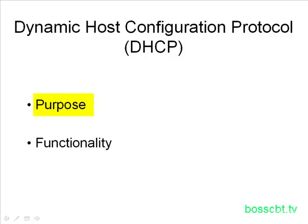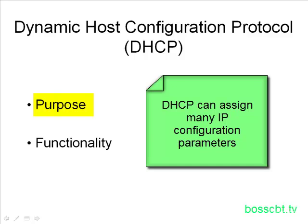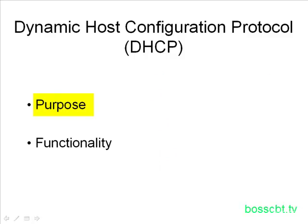DHCP is also useful because it can assign more than just an IP address. It assigns the subnet mask that goes along with the IP address. It can also assign a default gateway for a host, and it can tell the host which DNS servers to use. There are quite a few other fields that can be sent to a client when using DHCP. So the purpose is dynamic host configuration — you're dynamically sending configuration information to a host.